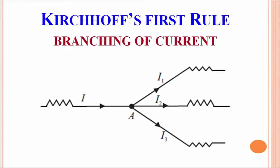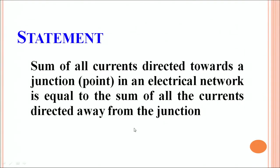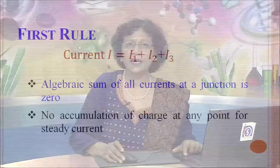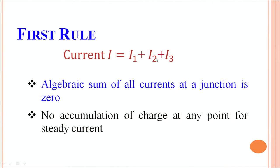If the value of a resistor is higher, then the corresponding current drawn by that branch will be lower as per Ohm's law. Similarly, if the resistor value is small, then the current drawn by that branch will be larger. The statement of the first rule: the sum of all currents directed towards a junction in an electrical network is equal to the sum of all currents directed away from the junction. We can write it as: current I is equal to I1 plus I2 plus I3.